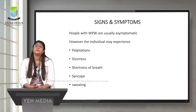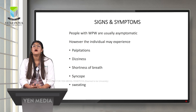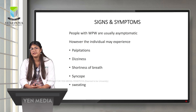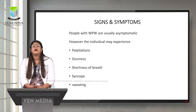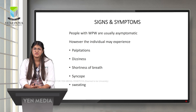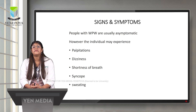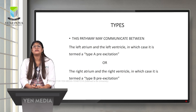People with WPW syndrome are usually asymptomatic. However, individuals may experience palpitations, dizziness, shortness of breath, syncope, and sweating. Because the heart rate is significantly higher than normal in WPW syndrome, it may affect cardiac output and systemic perfusion, leading to these symptoms.